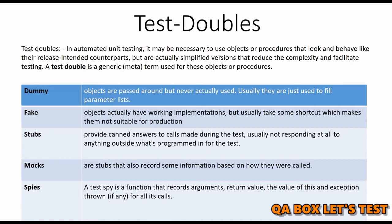Fake: objects actually have a working implementation but usually take some shortcuts which make them not suitable for production. Fake is used to simplify a dependency so that unit tests can pass easily — it merely provides a way for the interaction to occur in a self-consistent manner. A common place to use fake is database access. Stub: stubs provide hard-coded answers to calls made during the test, usually not responding to anything outside what's programmed for the test. Stubs are used to provide indirect input to the software under test from its collaborators or dependencies — these inputs could be objects, exceptions, or primitive values. We can use a stub to return a fixed response value, like the stubbed Axios request shown earlier.